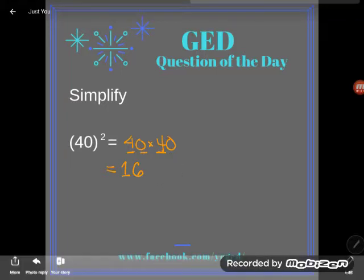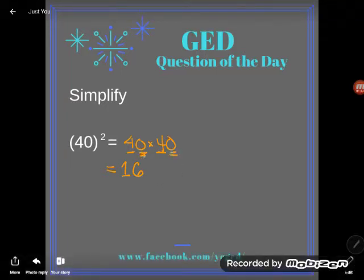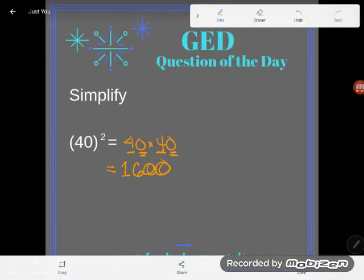So how many trailing zeros did I have? One, two. So I'm going to end up with one, two in my answer. So 40 squared, or 40 times 40, is the same as 1600.